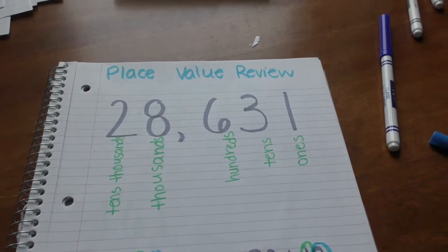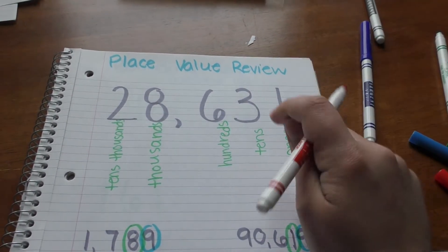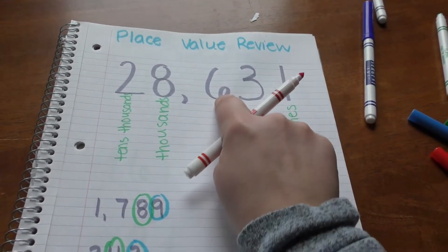Why don't we do one more? We're gonna circle our hundreds place in red, okay? So hundreds place is 1, 2, 3, it's the third number.